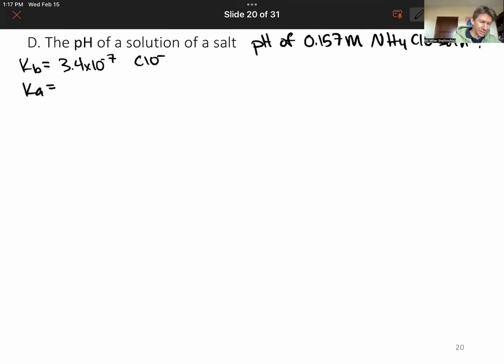Then we're going to be comparing it to the Ka value for ammonium. And that's going to be 5.6 times 10 to the minus 10.